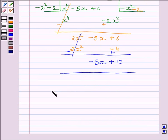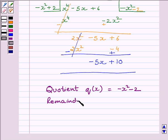So our required answer is quotient q(x) is equal to minus x squared minus 2 and remainder r(x) is equal to minus 5x plus 10.